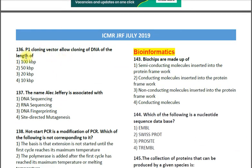Question number 136: P1 cloning vector allows cloning of DNA of the length of — option 1: 100 KBP; option 2: 50 KBP; option 3: 20 KBP; option 4: 10 KBP. KBP stands for kilobase pairs. The correct answer is the first option — 100 KBP.